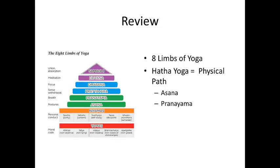A quick review from last week: the pyramid on the left of your screen represents the eight limbs of Raja or Ashtanga yoga. Get really comfortable with this pyramid — you're going to see it a lot this semester. Your bottom two limbs, the red and orange bars, are the Yamas — our social restraints — and the Niyamas — our personal observances. We'll talk about those next week. This week we are concentrating on the two green bars: Asana, which are the postures, and Pranayama, which is breath control.